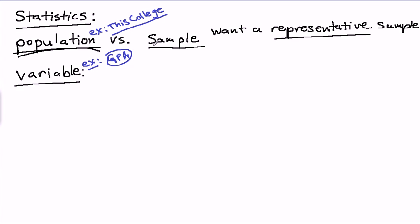Because what we learn from this sample, we want to take and generalize to the entire population. Remember, the whole point of taking the sample was because we didn't have enough time or resources to collect all the information from our population of interest. So, ideally, since we have to settle for a sample, we want that sample to be representative.